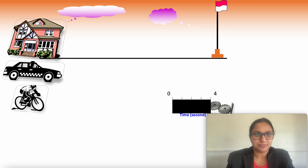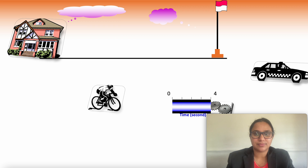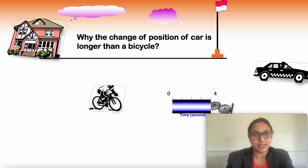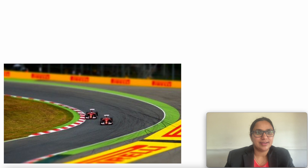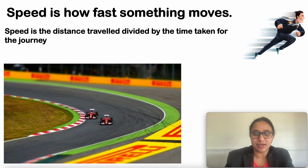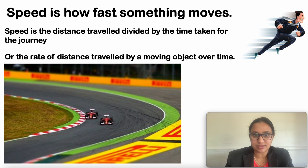As you can see here, why is the change of position of a car longer than that of a bicycle? The car has travelled faster than the bicycle. Speed is nothing but how fast something moves. Speed can be defined as the distance travelled divided by the time taken, or the rate of distance travelled by a moving object over time.